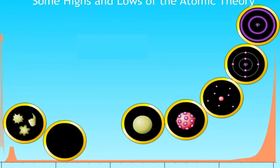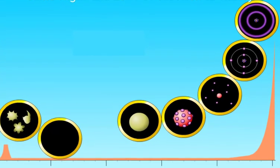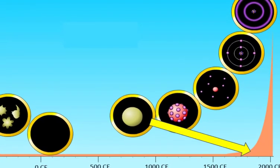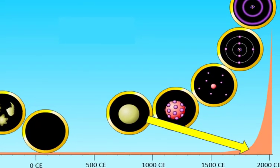The story of the atom is one of dead ends, perseverance and lucky guesses. By about 1850, scientists accepted that everything was made of atoms, and atoms were as small as it got.